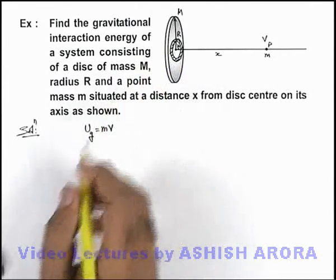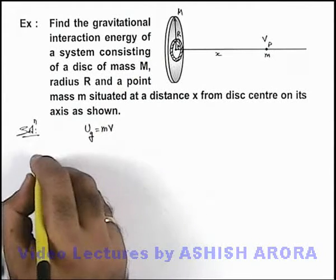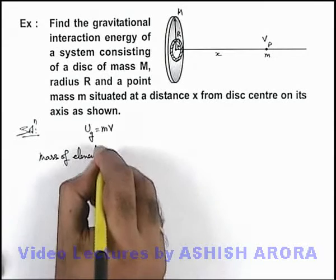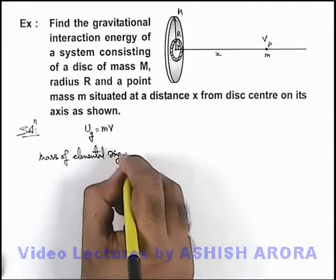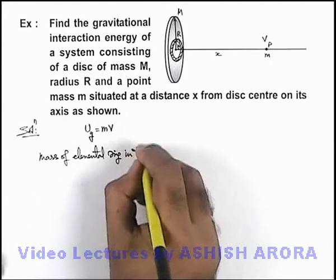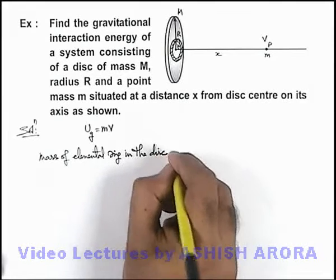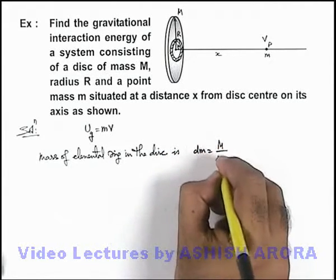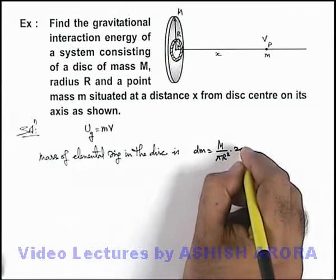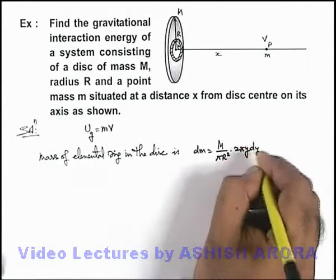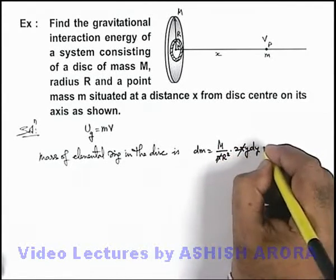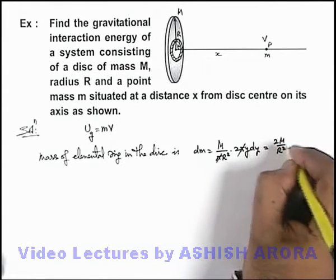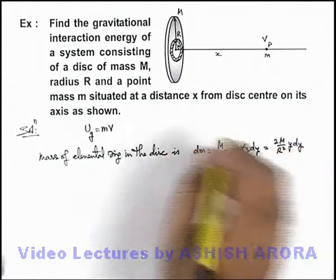If we calculate the mass of this elemental ring, the mass of the elemental ring in the disc can be written as dm, which is M divided by π R² multiplied by 2π y dy, which simplifies to 2M divided by R² times y dy. This is the mass of the elemental ring.